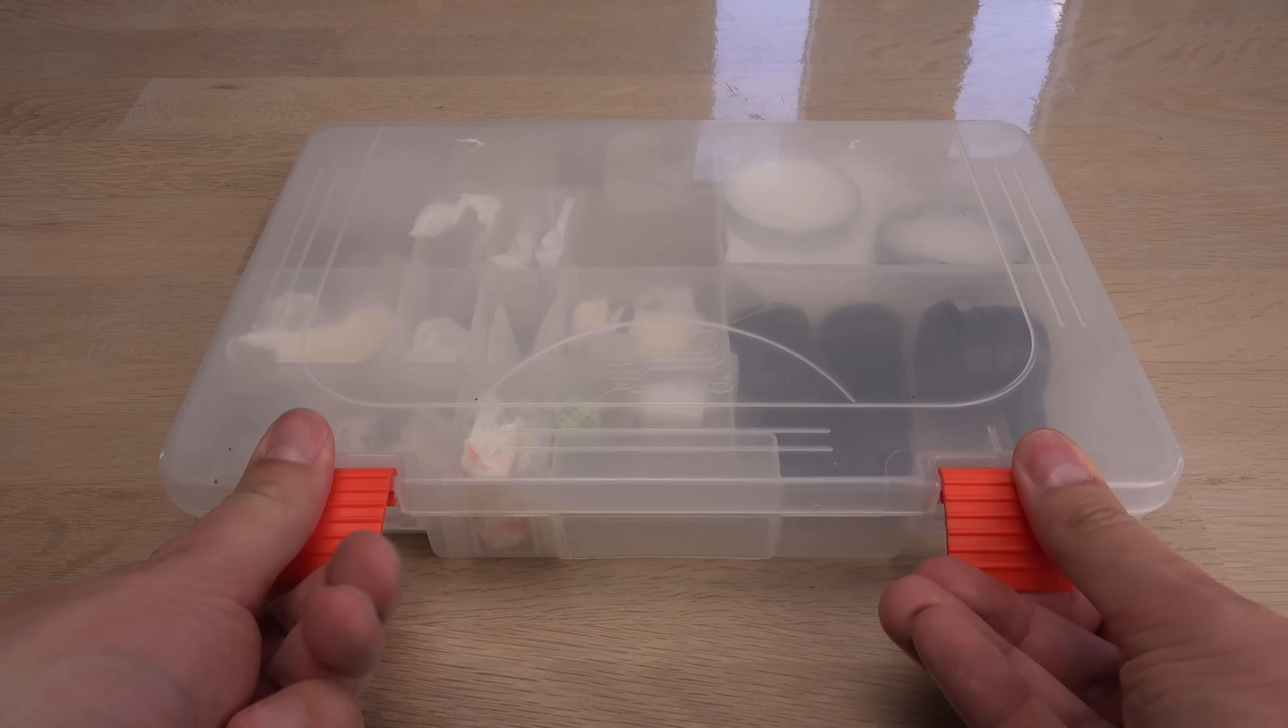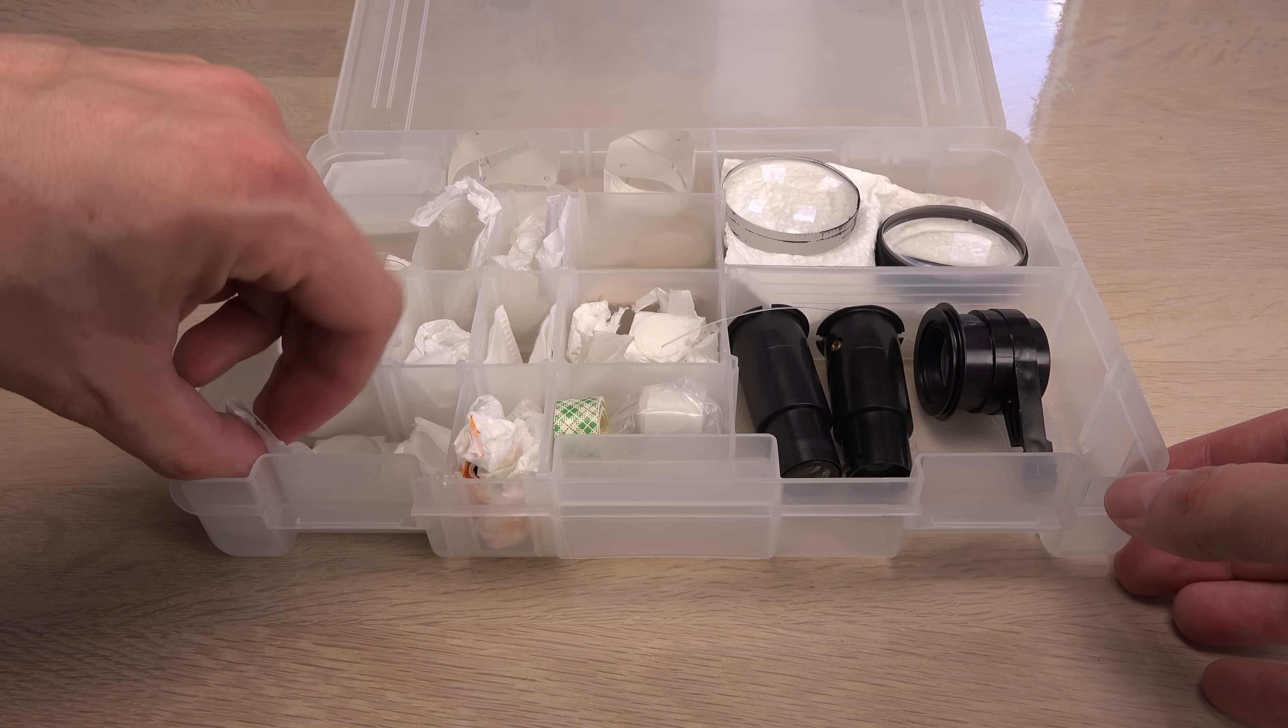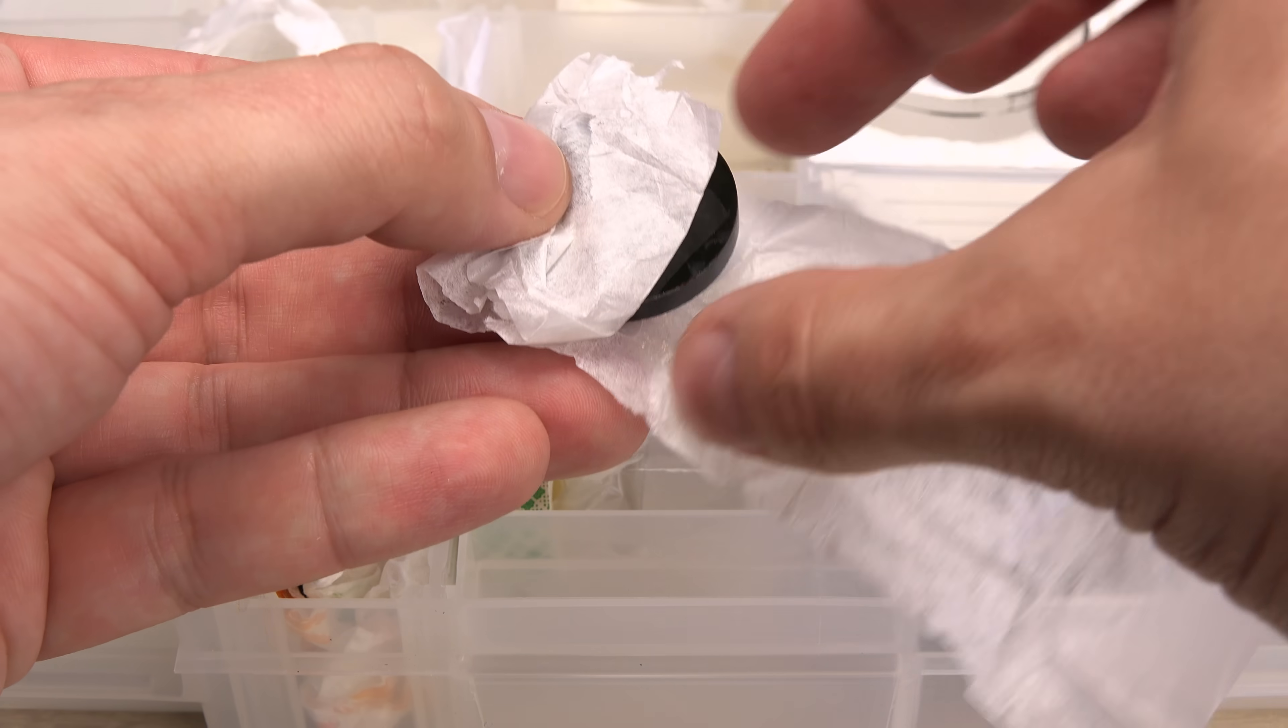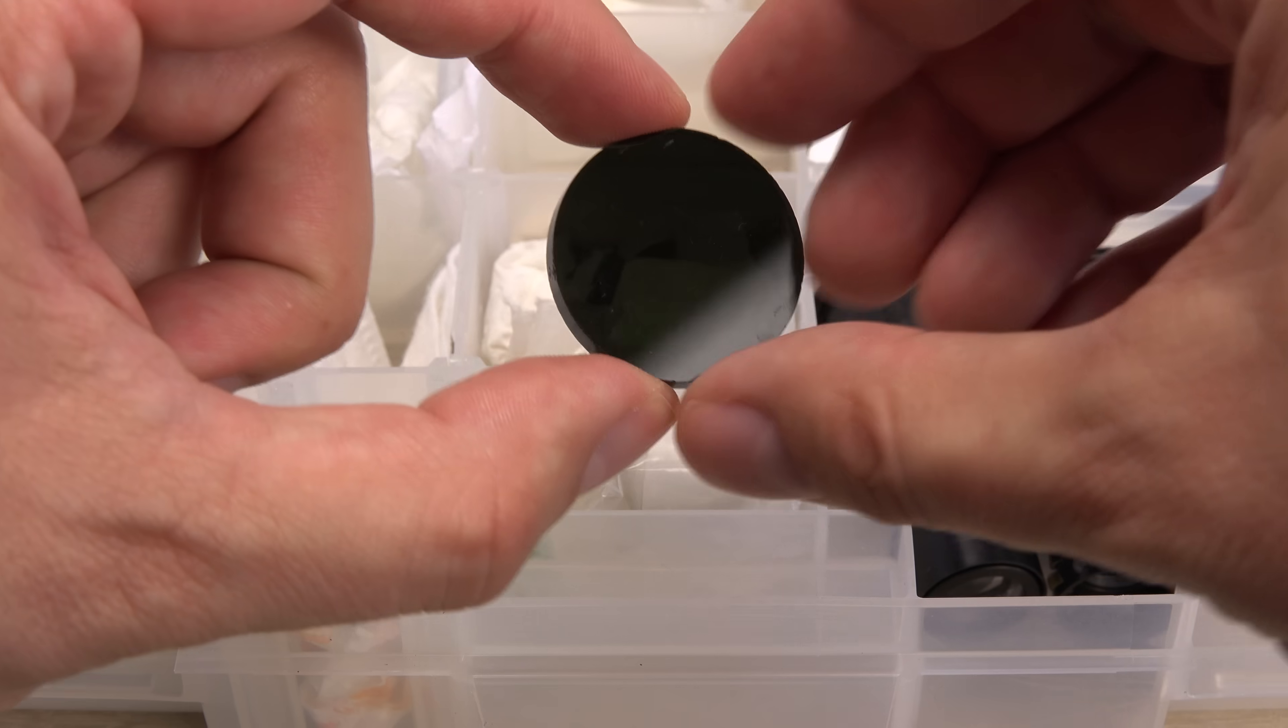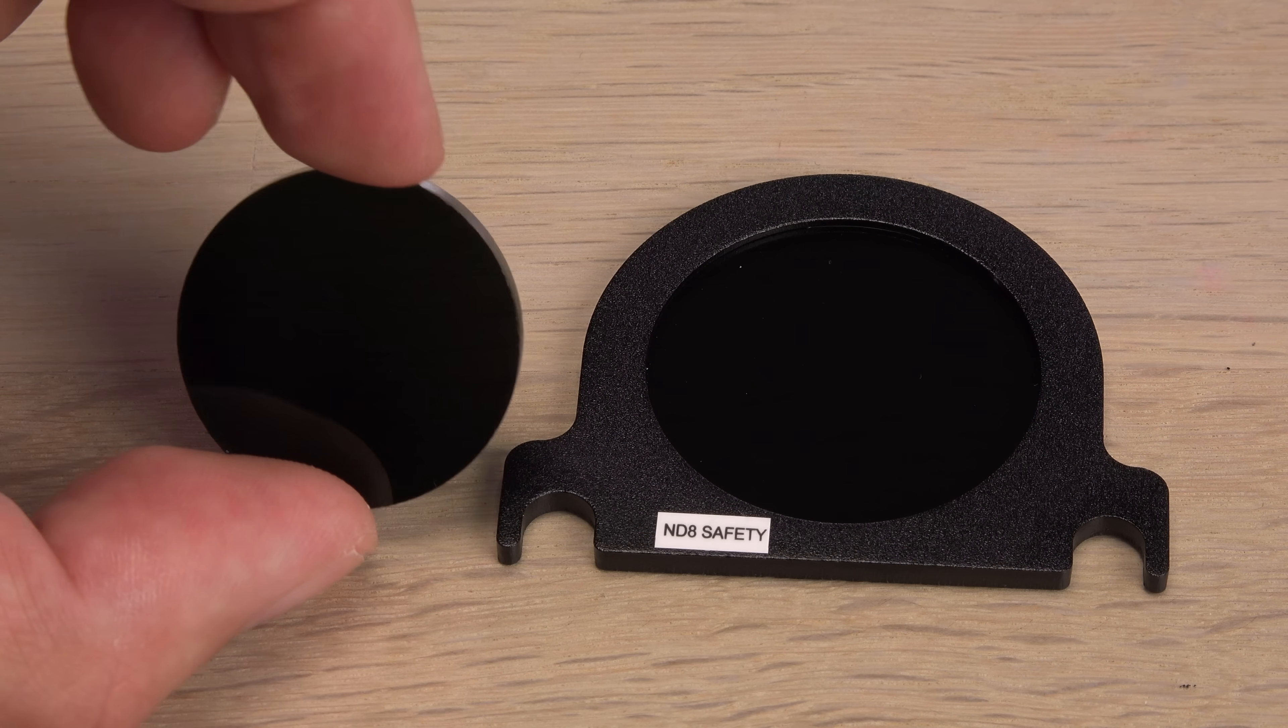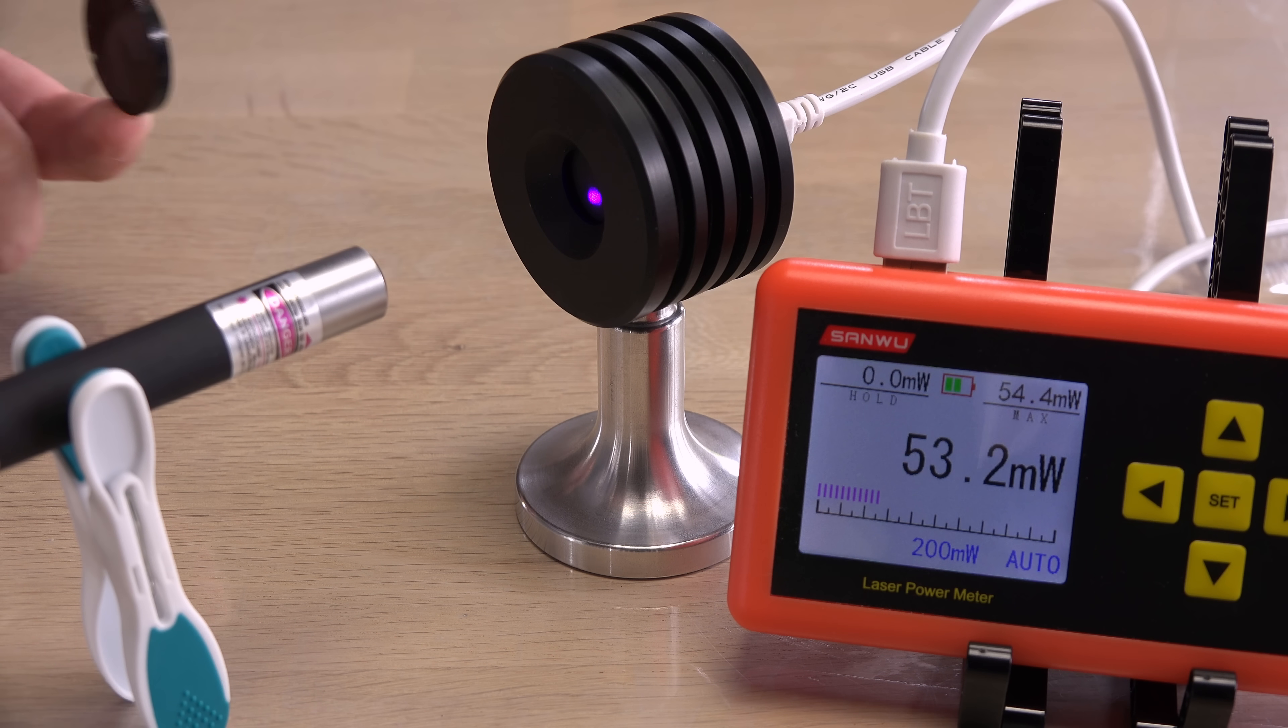I actually have another ND filter to test. It is unlabeled and I don't even remember how I got it. It just sits in my scrap optics box. In a direct comparison to the ND8 filter, the mystery filter appears much stronger, almost opaque. Let's test how strong the mystery filter is.